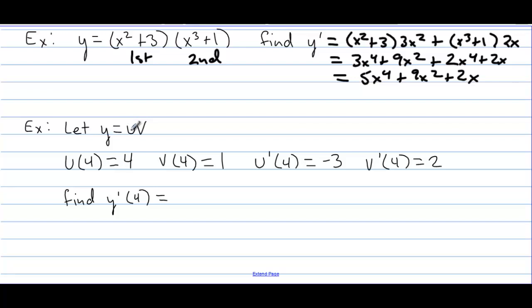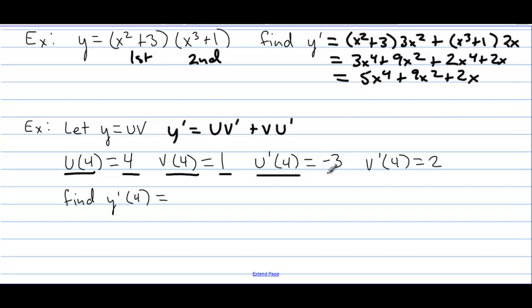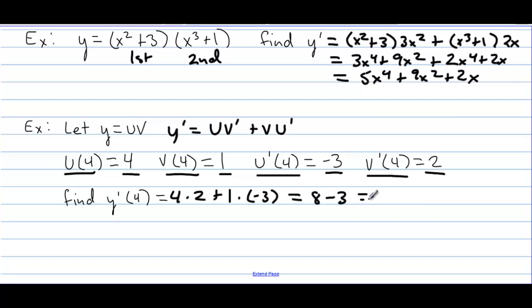If we let y equal u times v, then y prime is first times derivative of second plus second times derivative of first. If u(4) = 4, v(4) = 1, u′(4) = −3, and v′(4) = 2, we can find y prime at 4. So u is 4, v prime is 2, v is 1, and u prime is negative 3. This gives 8 minus 3, which equals 5.